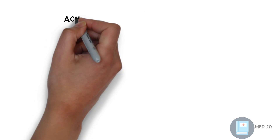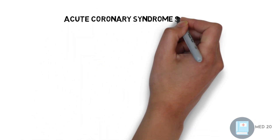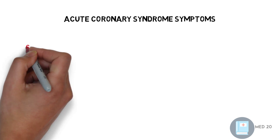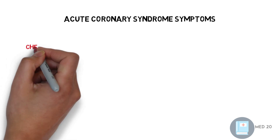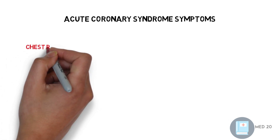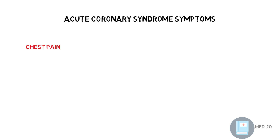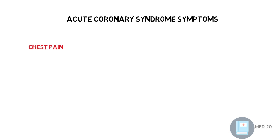Acute coronary syndrome symptoms may include: the main symptom is chest pain, which might come in different forms — either heaviness, pressure, or burning. Any person who comes to the emergency with chest pain, acute coronary syndrome should be ruled out.